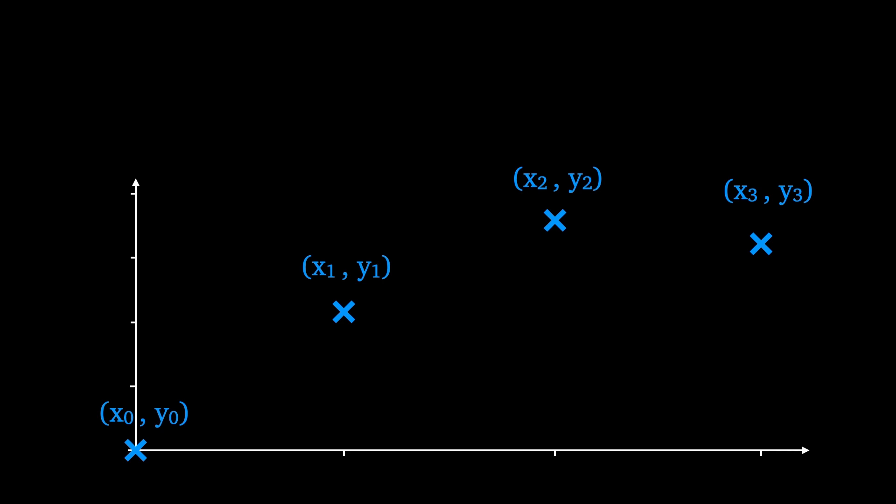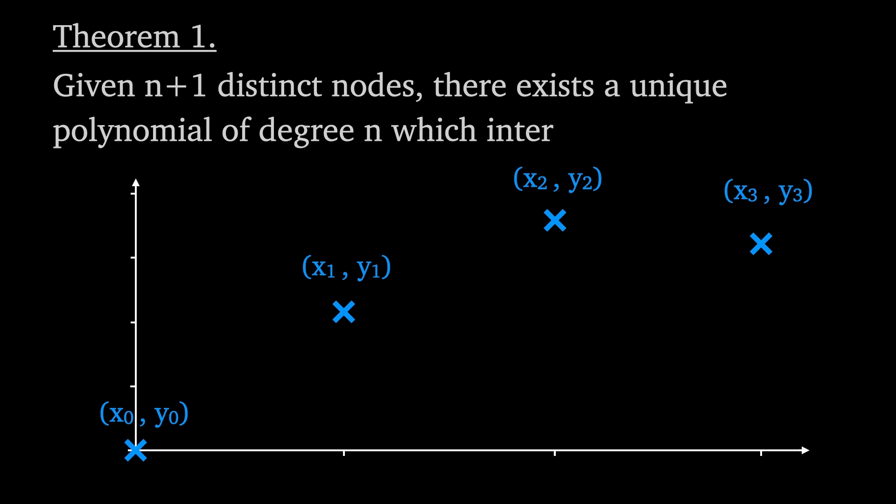First, some background. We have nodes or coordinates labeled from 0 to n we wish to interpolate. Why n plus 1? Well, given n plus 1 distinct nodes there exists a unique polynomial of degree n which interpolates them. By the end of the video we'll have proved this theorem.